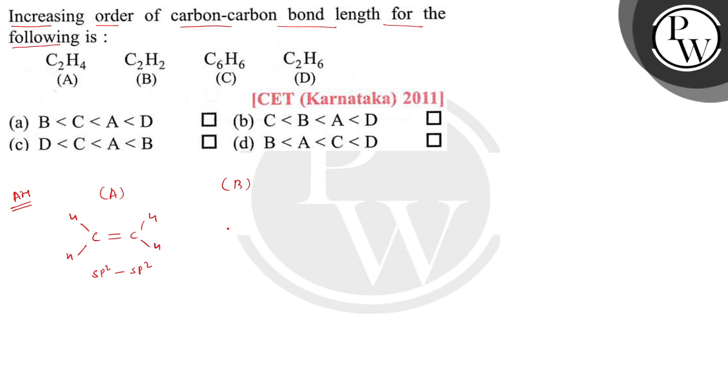In case of B, it is C2H2 and the structure is HC triple bond CH. Here the overlapping of carbon is sp and sp hybridization, so overlapping will be due to sp hybridized orbital.